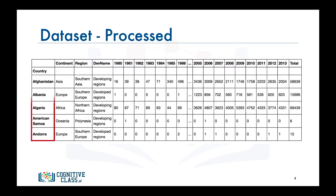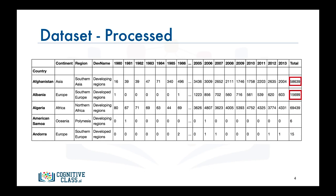Now let's process the data frame so that the country name becomes the index of each row. This should make retrieving rows pertaining to specific countries a lot easier. Also, let's add an extra column which represents the cumulative sum of annual immigration from each country from 1980 to 2013. So for Afghanistan it is 58,639 total, and for Albania it is 15,699, and so on. Let's name our data frame df_canada.